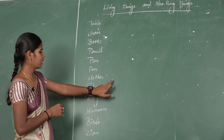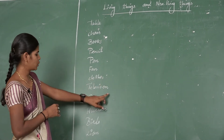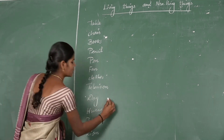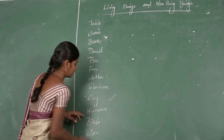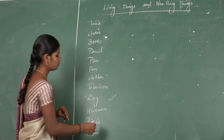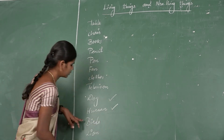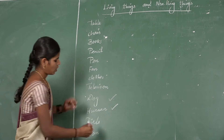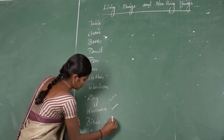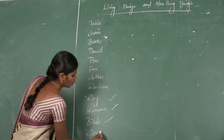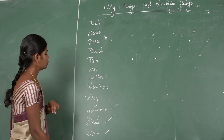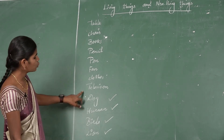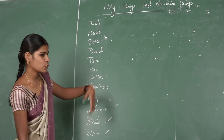Clothes cannot move. Television cannot move. But dog can move from one place to another. Human can also move from one place to another. Birds can fly from one place to another. Lion can also move from one place to another. So things that can move from one place to another are called living things.